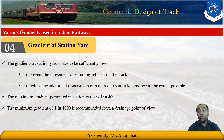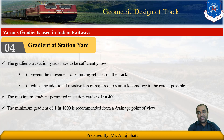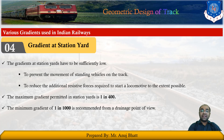The fourth type is the gradient at station yards. The gradient at station yards must be sufficiently low to prevent movement of standing vehicles due to the combined effect of gravity and strong winds, and to reduce the additional resistive force required to start locomotives. In Indian Railways, the maximum gradient permitted in a station yard is 1 in 400, while the minimum gradient that can be provided is 1 in 1000, which is recommended only for drainage purposes.